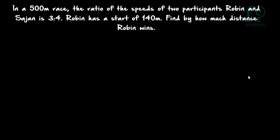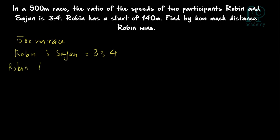So what is given? It is a 500 meter race. The ratio of the speeds of the participants Robin and Fajan is given — Robin to Fajan is 3 is to 4. So Fajan is actually the quicker runner compared to Robin. But Robin is having a start of 140 meters, so Robin is starting 140 meters ahead and is winning the race. We have to find out by how much distance Robin will be beating Sajan.